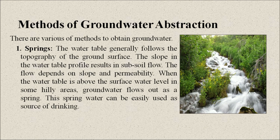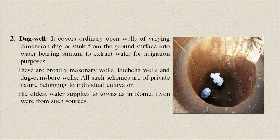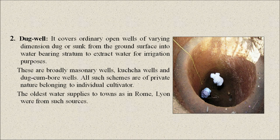Now, methods of groundwater extraction. There are various ways to obtain groundwater. First is the spring. The water table generally follows the topography of the ground surface, and the slope in the water table profile results in subsoil flow. When the water table is above the surface water level in hilly areas, groundwater flows out as a spring, which can be easily used as a source of drinking water. Next is the dug well, which covers ordinary open wells of varying dimensions dug from the ground surface into water-bearing strata to extract water for irrigation. These include masonry wells, kaccha wells, and dug-cum-bore wells, and are of private nature belonging to individual cultivators.